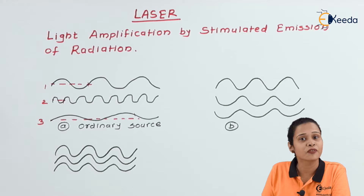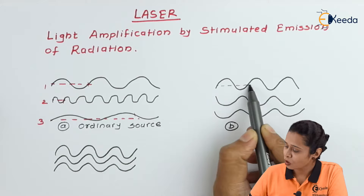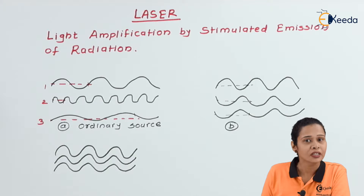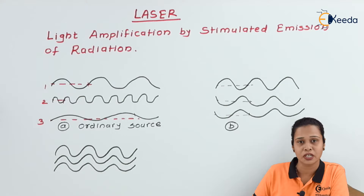Then we will see the second diagram. In this second diagram, if we observe, the wavelength of all the waves is the same. When there is the same wavelength, we can say it's monochromatic light. But if you observe the phase, there is a phase difference between these three waves. This means it is a monochromatic but incoherent source of light.